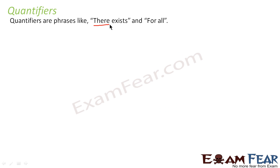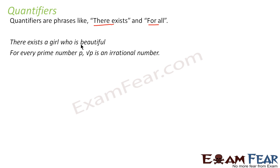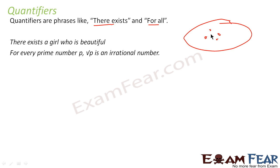Quantifiers are statements or phrases like 'there exist' or 'for all'. For example, when I say there exists a girl who is beautiful — there are a hundred girls, and out of that, one girl will be beautiful. So 'there exists' is used when you have a bigger set and some elements satisfy your condition.